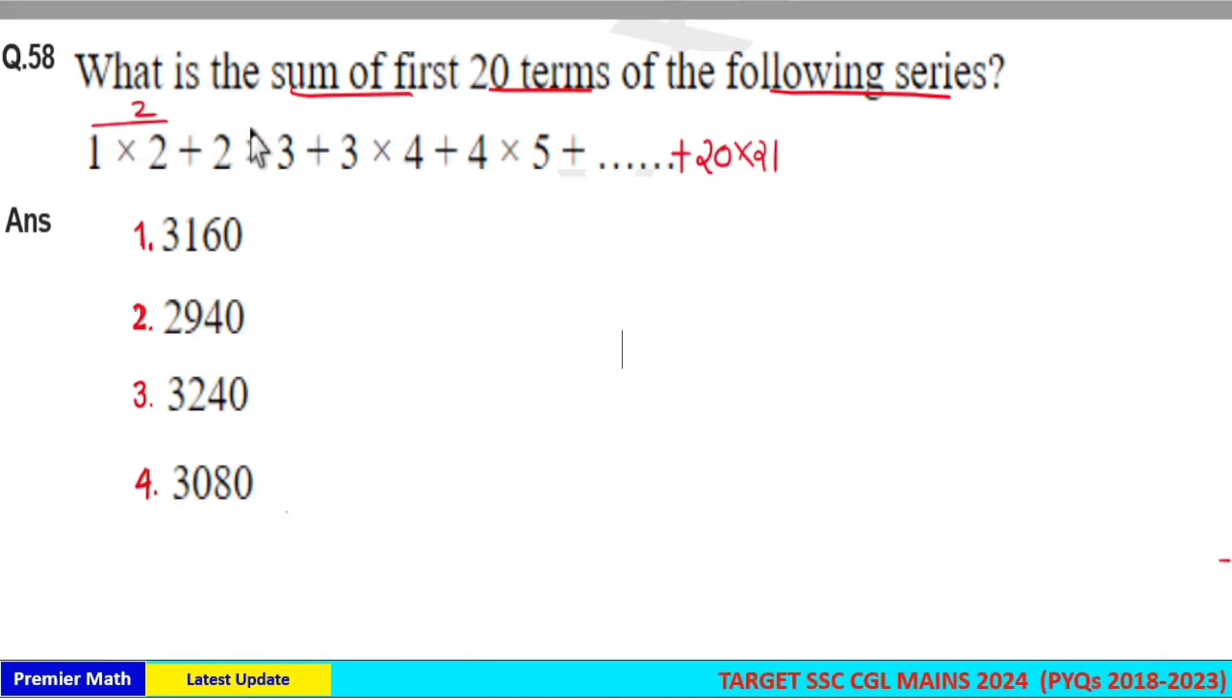This is 1 into 2 is 2, 2 into 3 is 6, 3 into 4 is 12, 4 into 5 is 20 and so on.